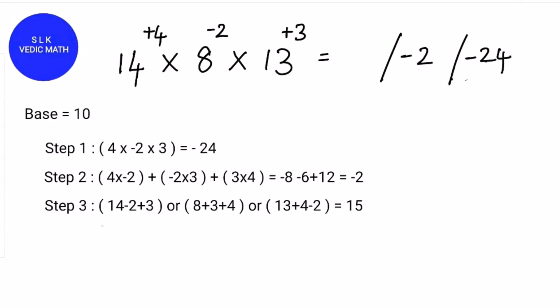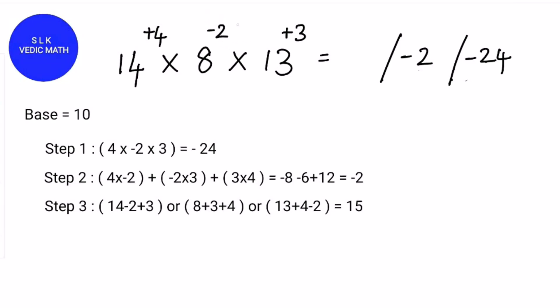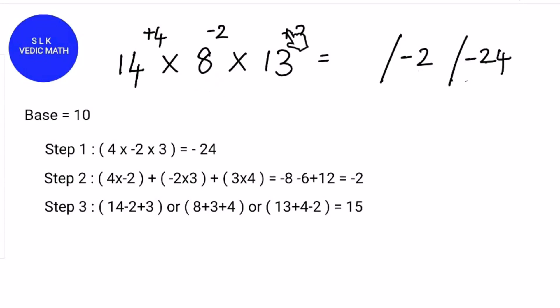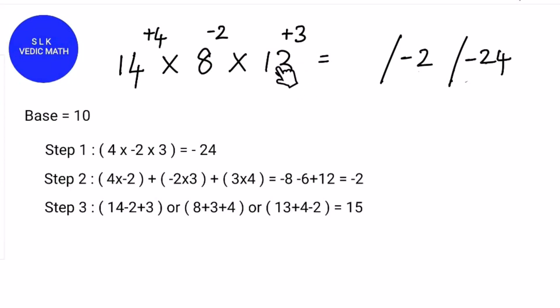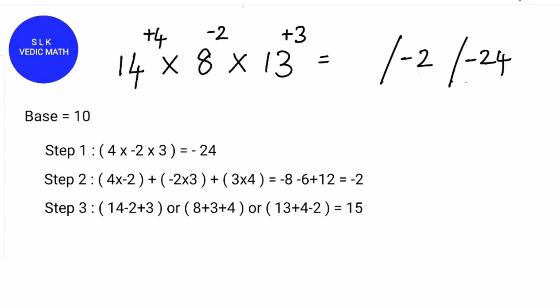Now for step 3, pick a number. So 14: 14 - 2 + 3. Or if you pick 8 you do 8 + 3 + 4. If you pick 13 we do 13 + 4 - 2. They all give the same answer which is 15. So write 15 in the first part.